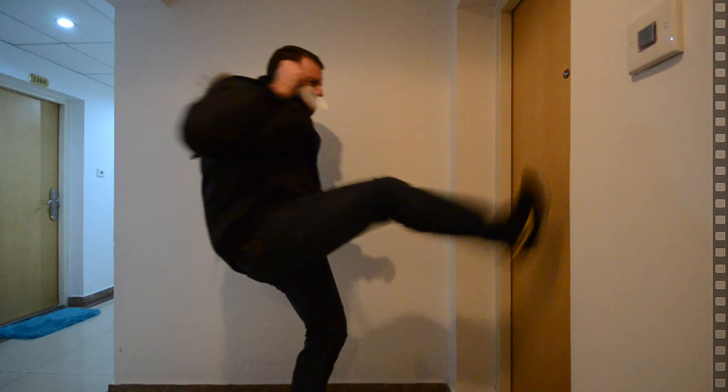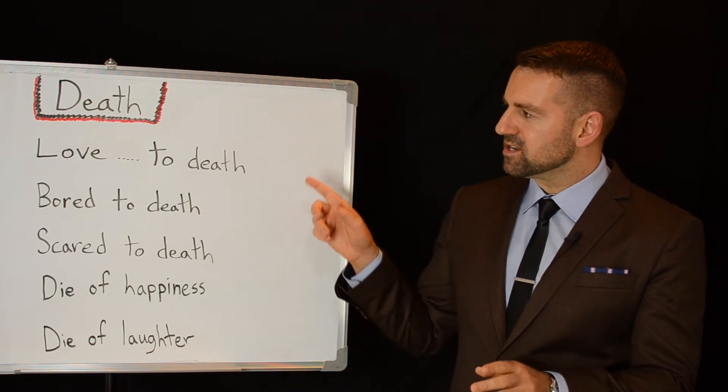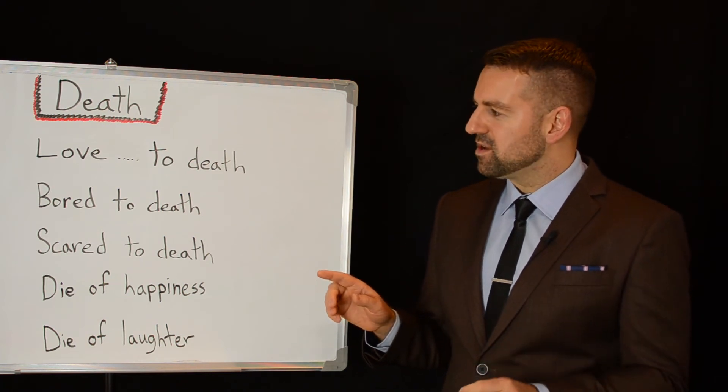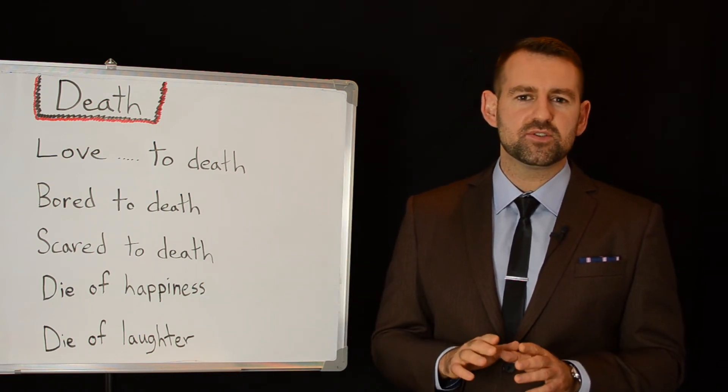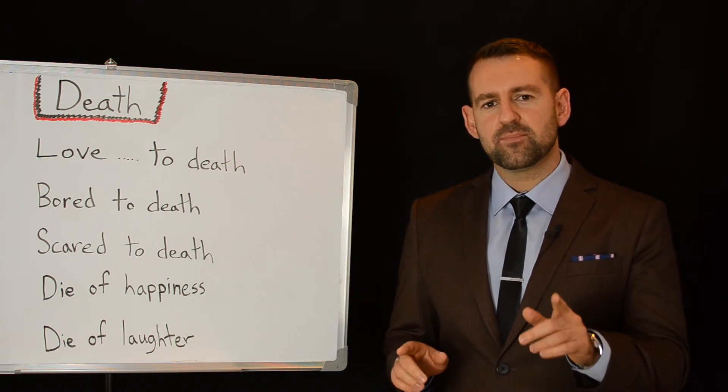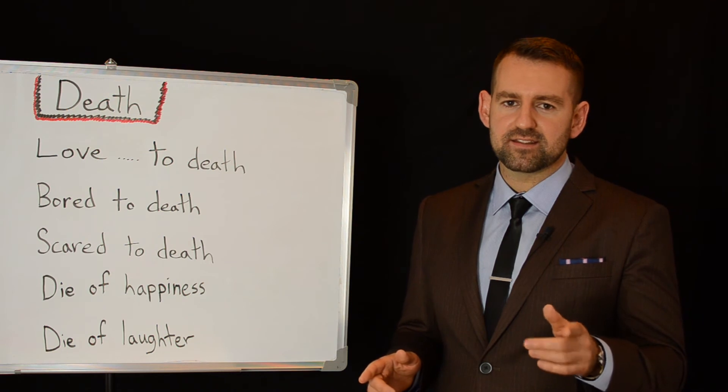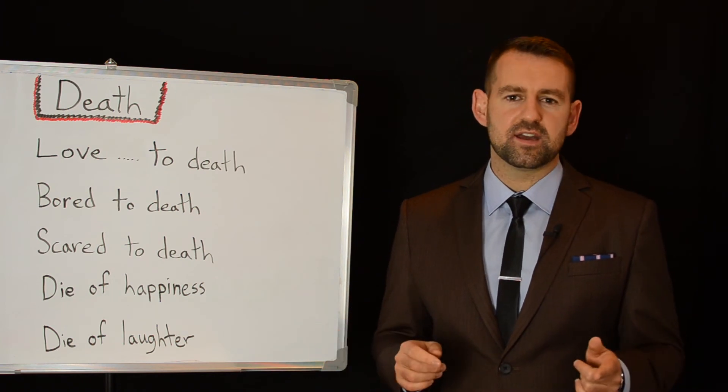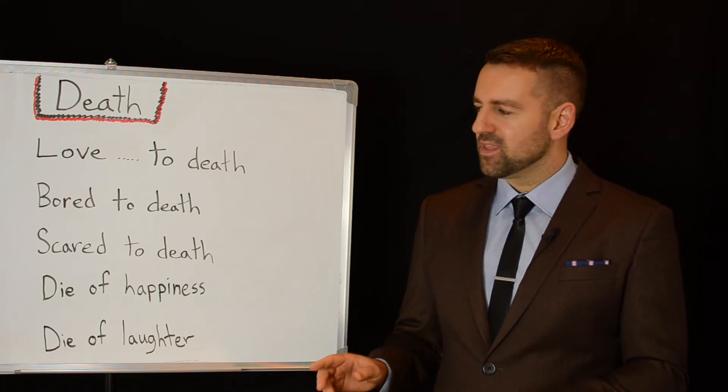Here are some expressions that use the word death but have nothing to do with death. The first one is to love something or someone to death. That means you love it a lot. For example, women love chocolate to death, or most men love beer to death. You could love anything to death. You could say, I love my grandma to death, or I love my kids to death, or I love my dog to death.